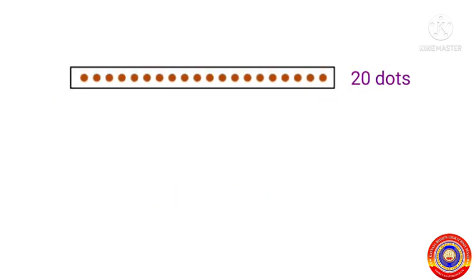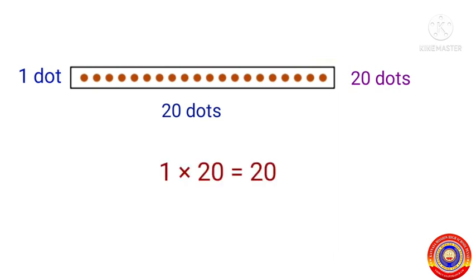Next we shall arrange these dots in another way also. The number of dots widthwise is equal to 20 and the number of dots heightwise is equal to 1. Therefore the total number of dots is equal to 1 into 20, that is equal to 20 dots.